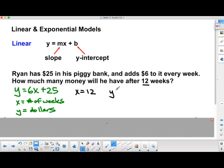So we'd say y equals 6 times 12, and then we'd add on 25. 6 times 12 is 72 plus 25, and 72 plus 25 is 97. In this case, we're talking dollars. So after 12 weeks, he's going to have $97.